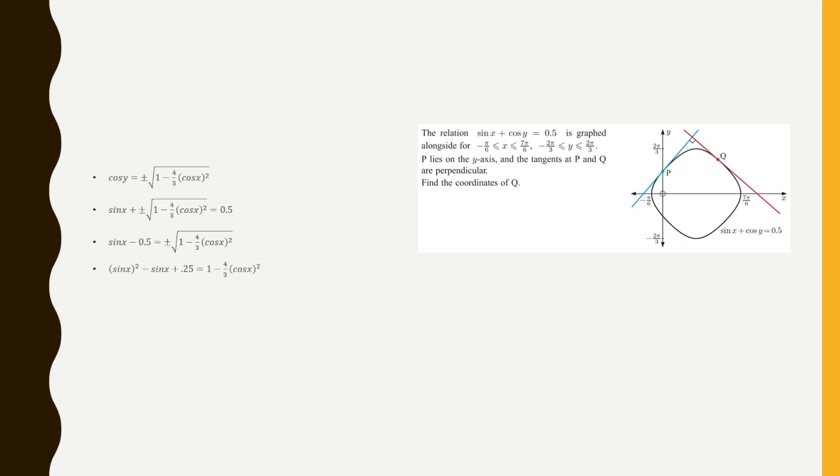So the left side becomes sine squared minus sine of x plus one fourth. And that's equal to one minus four thirds cosine squared. Cosine squared, I can rewrite it as one minus sine squared. Because the idea here is, I want my entire equation to only depend on sine of x. I don't want to have sine of x and cosine of x. So I make the substitution. I simplify down to negative one third sine squared minus sine of x plus seven over twelve equal to zero. And I end up with x equal to pi over six and five pi over six.